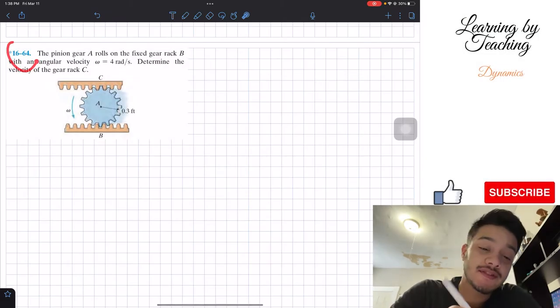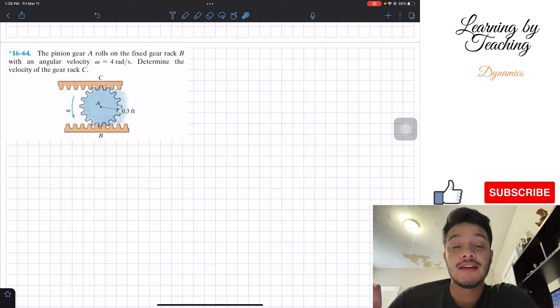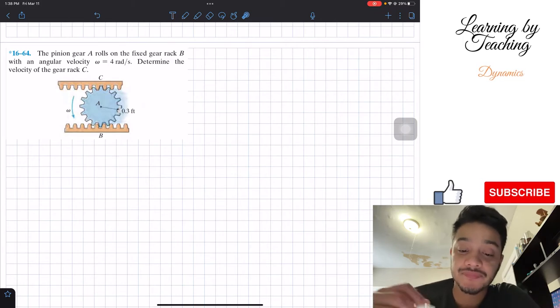Today we're in dynamics, and we're going to solve problem 16.64. It says, the pinion gear A rolls on the fixed gear rack B with an angular velocity of omega equal to 4 radians per second. Determine the velocity of the gear rack C.